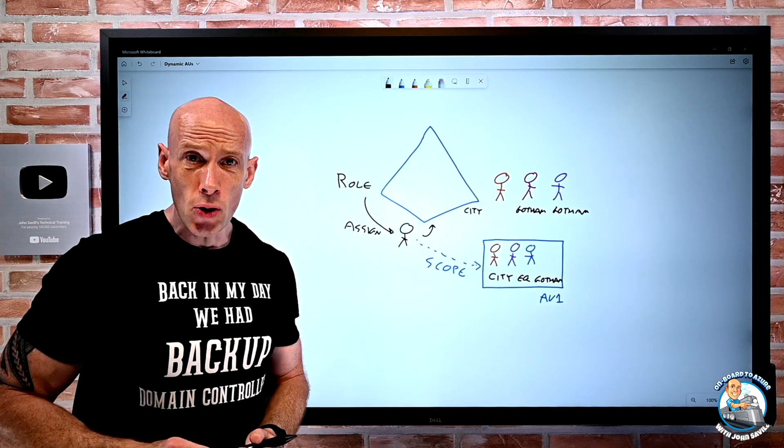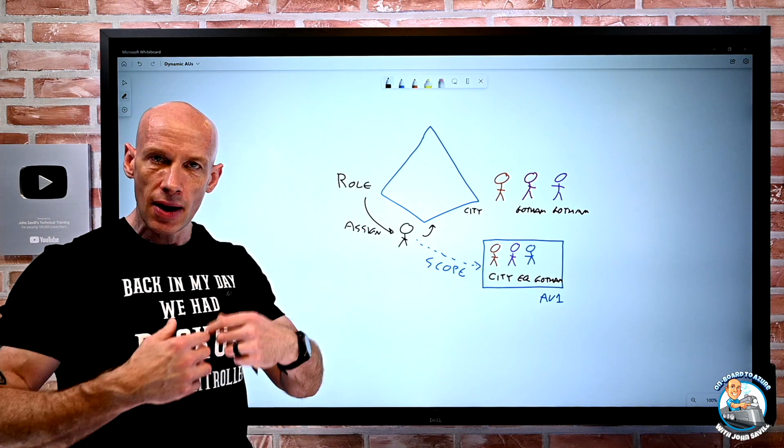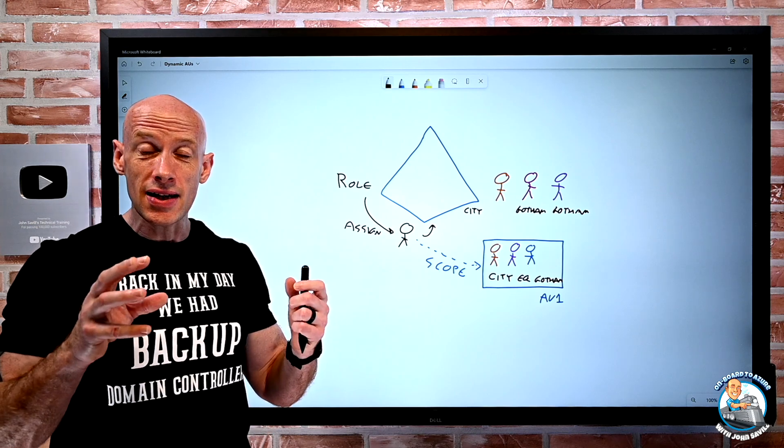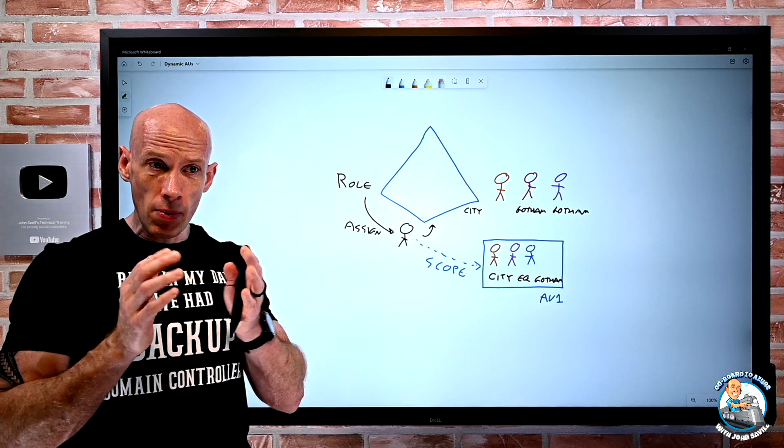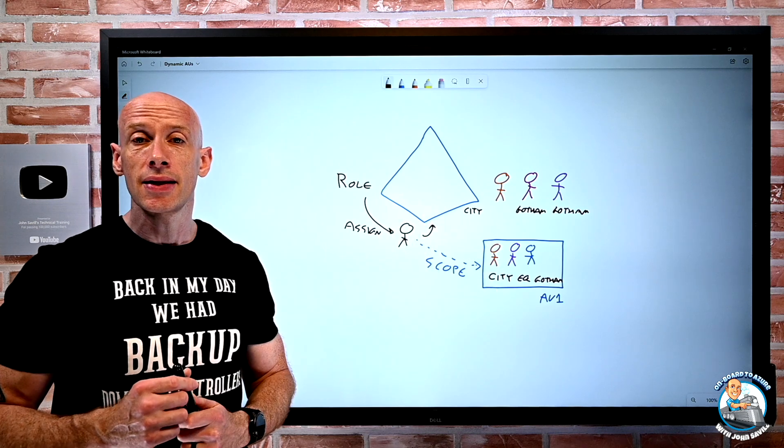And then just give that local help desk person the role at the scope of the AU instead of all of Azure AD. So that's it. That's all I wanted to talk about. But it's super powerful. And it's something that can really help us and give that granularity. And remember, I can also, for the devices, there are now custom roles that work with devices. So I could create a scope down role, maybe just reset BitLocker, for example. I can do those things now as well.